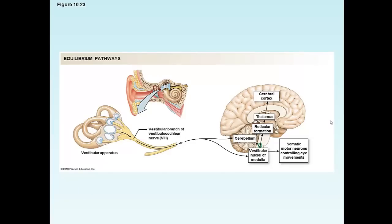The equilibrium pathway works as follows: fluid moves and otoliths move in a certain direction, stimulating the hair cells. That signal travels back via the vestibular branch of the vestibulocochlear nerve to the brainstem, up to the cerebellum, and also through the midbrain, thalamus, and to the cerebral cortex. We also have output to the somatic motor neurons controlling the eyes, which coordinate head movement and integrate everything to give us our sense of balance.